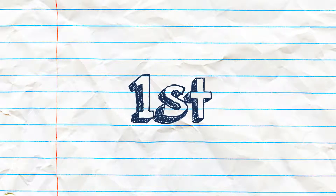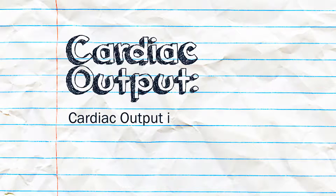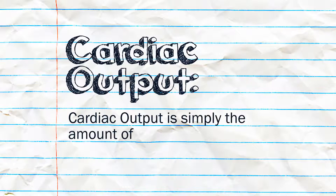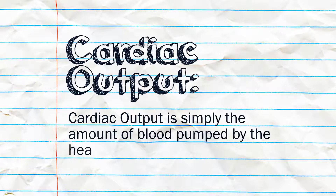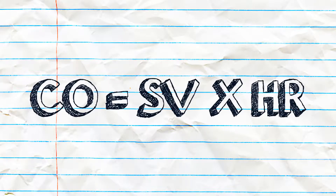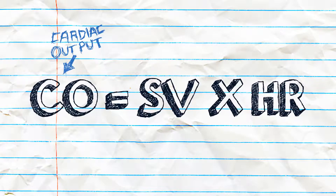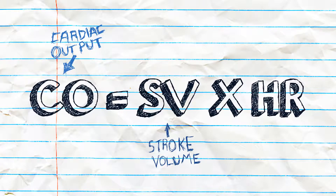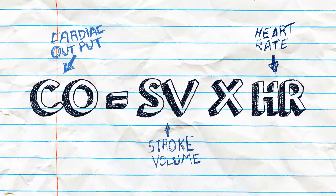First, let's define what cardiac output is. Cardiac output is simply the amount of blood pumped by the heart per minute. Take a look at the formula: cardiac output is the product of stroke volume multiplied by heart rate.